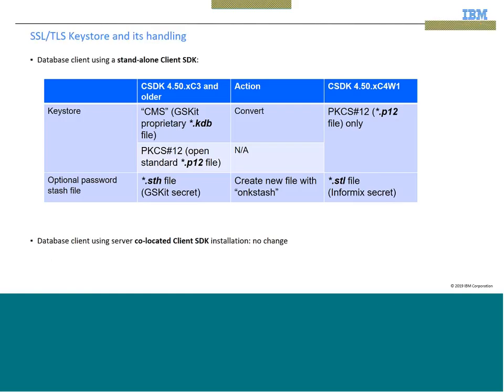Let's see what changes you will have to make. You will have an older keystore which you are using with 4.50 FC3 and older. By default it's the GSKit proprietary format, which is .kdb most of the time. If it's a .kdb file keystore, then you will have to convert it to PKCS12 format if you want to use it with 4.50 XC4W1. But if you already have a PKCS12 keystore in 4.50 XC3, then no conversion is necessary.